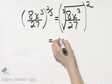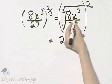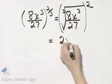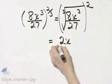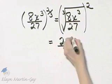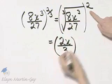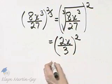The cube root of 8 is 2. The cube root of x cubed is x. The cube root of 27 in the denominator is 3. And now we will square our results.